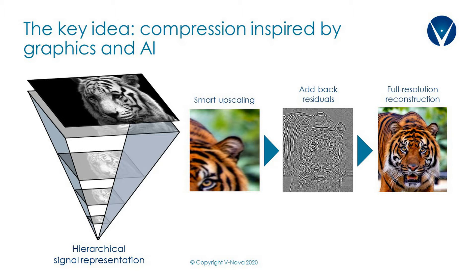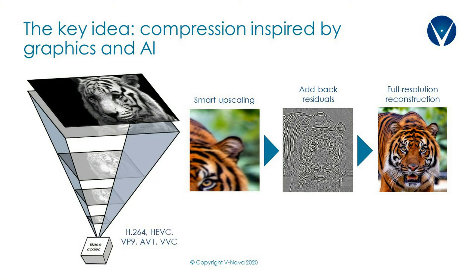In the case of LCVC, the tip of the pyramid is replaced by a legacy codec — that can be H.264, HEVC, VP9, AV1, or even VVC. The base codec compresses the lower resolution frame, and then LCVC adds a series of residuals to correct the issues of the base and enhance the picture to get to the target resolution and the best possible quality.